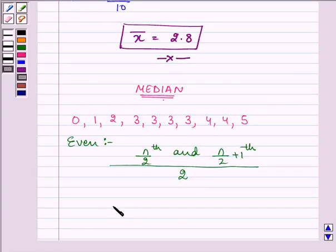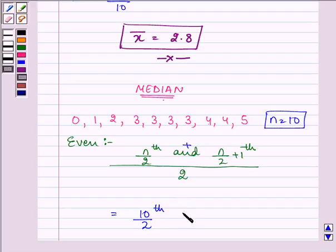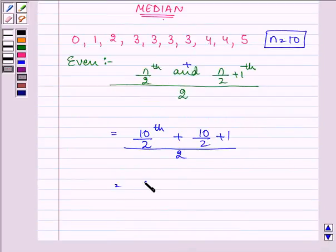Let us substitute the value of n as 10. Then, 10 by 2, it is 10 because the number of observations are 10, plus 10 by 2 plus 1, the whole divided by 2. That means 5th plus 6th observation divided by 2.